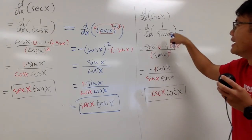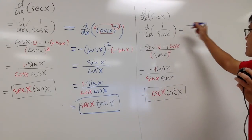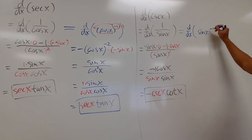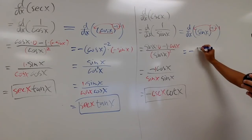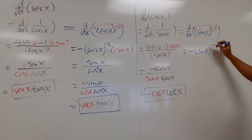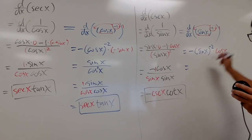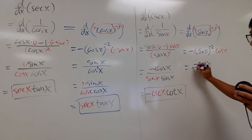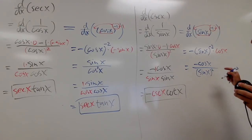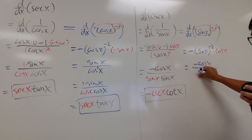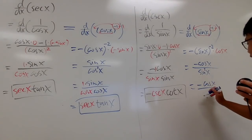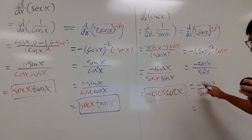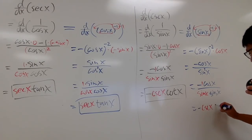Lastly, I'll run through this using the negative exponent approach. Writing cosecant x as sine x raised to the negative 1 power: d/dx of (sine x)^(-1). Bring the power to the front, minus 1 — we get negative sine x to the negative 2, and by the chain rule, multiply by the derivative of the inside, which is cosine x. So we have cosine x on the top over sine x squared, which gives us negative cosecant x times cotangent x.